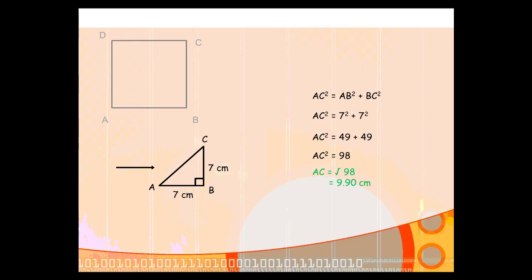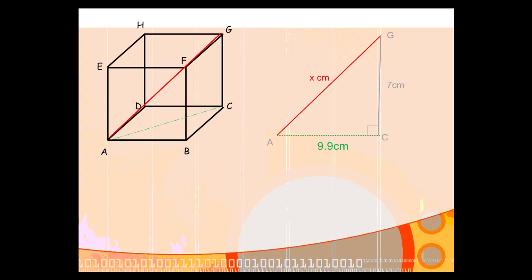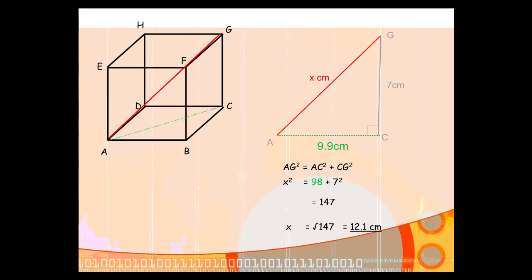That side is the length from A to C — the diagonal of the bottom face of our cube. Going back to our diagram, we now know the height of the triangle we extracted earlier, and we now know its base is 9.9 centimeters having used Pythagoras. So we use Pythagoras again to find X: X squared equals 98 plus 49, which gives us 147, and X is the square root of 147, which is 12.1 centimeters. These examples show how you can find a final answer by first finding something else — using Pythagoras more than once to reach the solution.